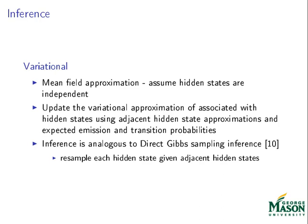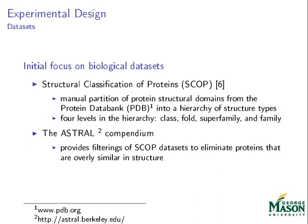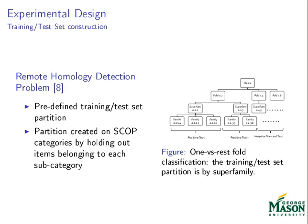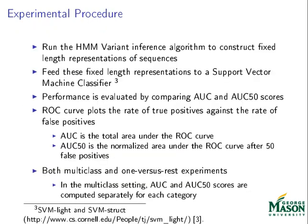We ran several experiments to test our methods on protein datasets. Specifically, we used datasets from the Structural Classification of Proteins library, filtered using ASTRAL filterings, which removed sequences that were too similar and would affect classification results. We constructed training and test sets for the remote homology detection problem, a well-defined problem in amino acid sequence classification. To construct a training set, we left out examples from separate subcategories in the SCOP hierarchy for the test set. We then fed the fixed-length representations from the HMM variant into an SVM classifier and measured performance using AUC and AUC50 scores under the ROC curve.